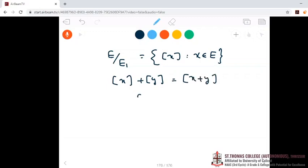Such that class X plus class Y is equal to class of X plus Y, and a scalar c times class X is equal to class of cX. With respect to these operations, E over E1 becomes a linear space, and class of 0, which is nothing but E1, will serve as identity. This is the 0 vector of E over E1.